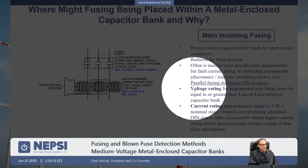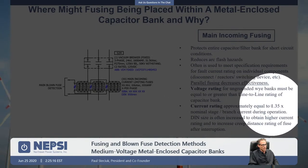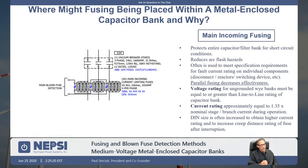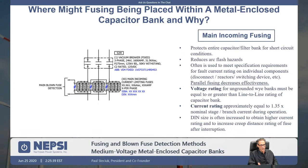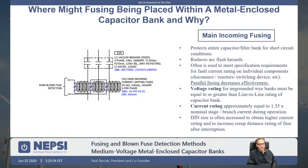For voltage rating, we always go with a line-to-line voltage rating. For current rating, the rule of thumb is 1.35 times nominal current. We often run into specifications asking for 40 kA or 60 kA fault current, and we're dealing with switching devices — the air disconnect switch, grounding switches, even the switching devices themselves — that have fault current ratings that are less. So we put current limiting fuses up front to limit the prospective fault current within the bank. However, the let-through current goes up each time you add a parallel fuse.